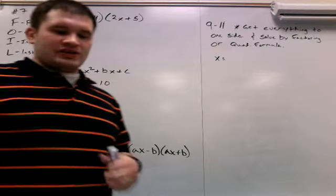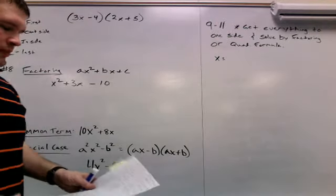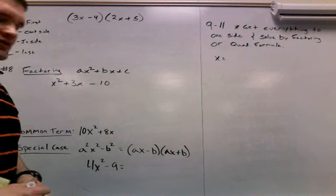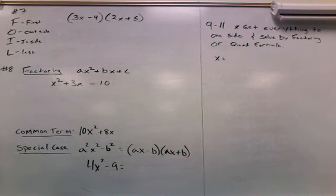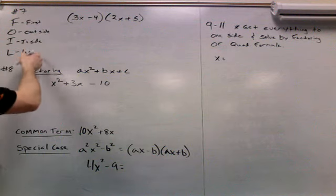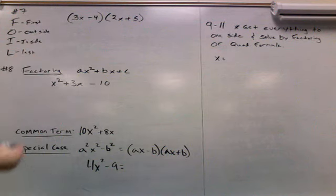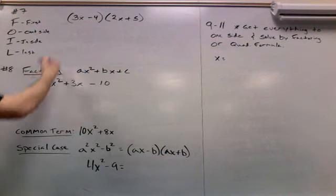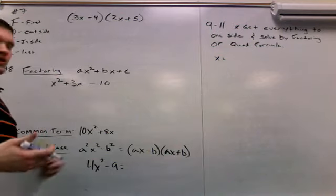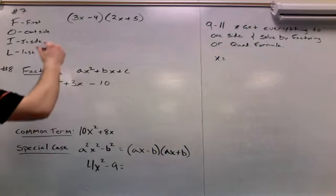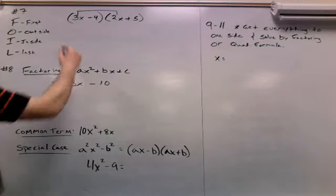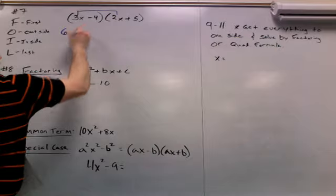Alright, I'll start with number 7. Number 7 says rewrite the polynomial factors in the form ax squared plus bx plus c. So in order to do so we need to FOIL. FOIL stands for first, outer, inner, last — whichever way you like. It reminds us what things to multiply together to expand the polynomial factors. For the Firsts, you multiply the first numbers together: 3x times 2x, which gives me 6x squared.